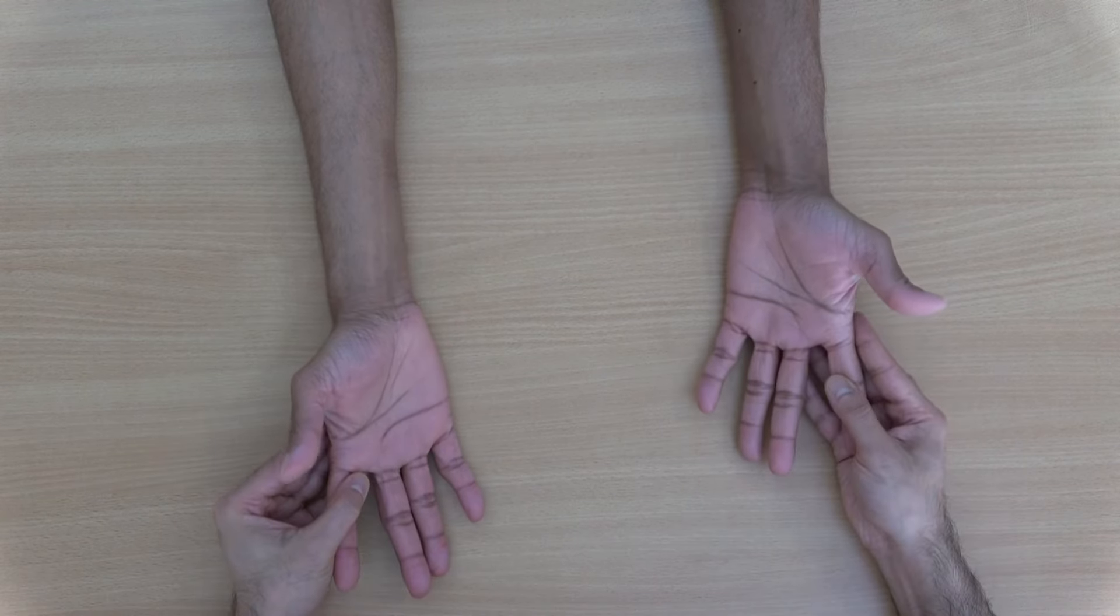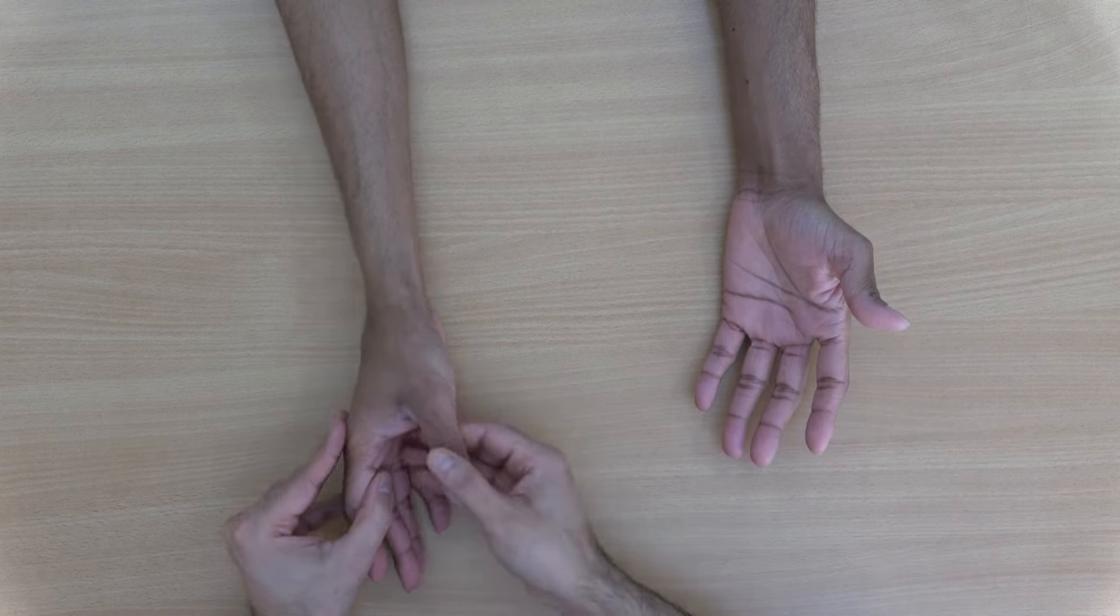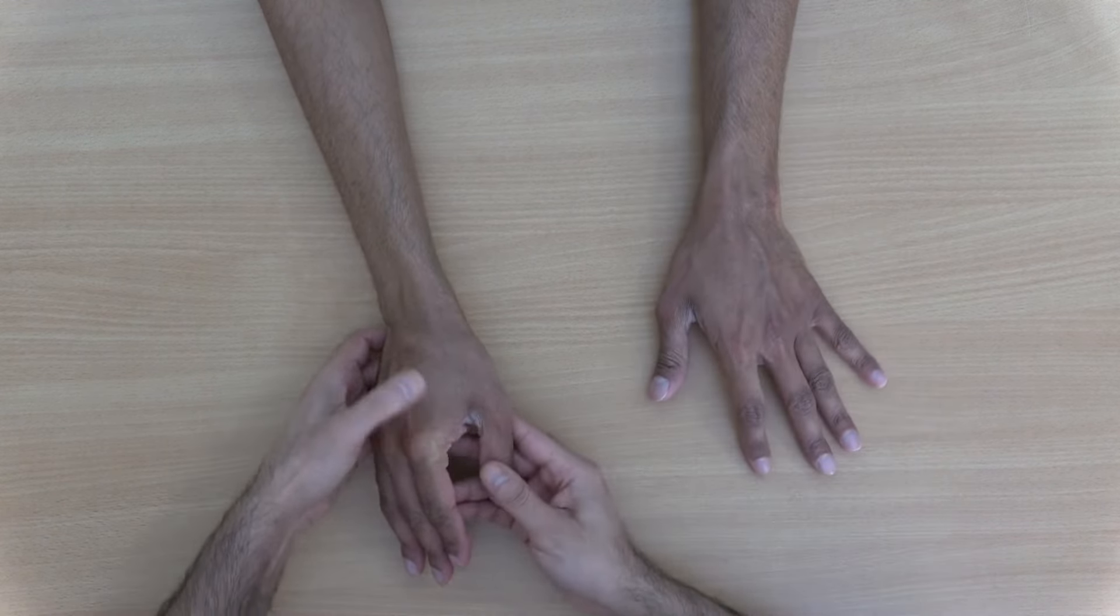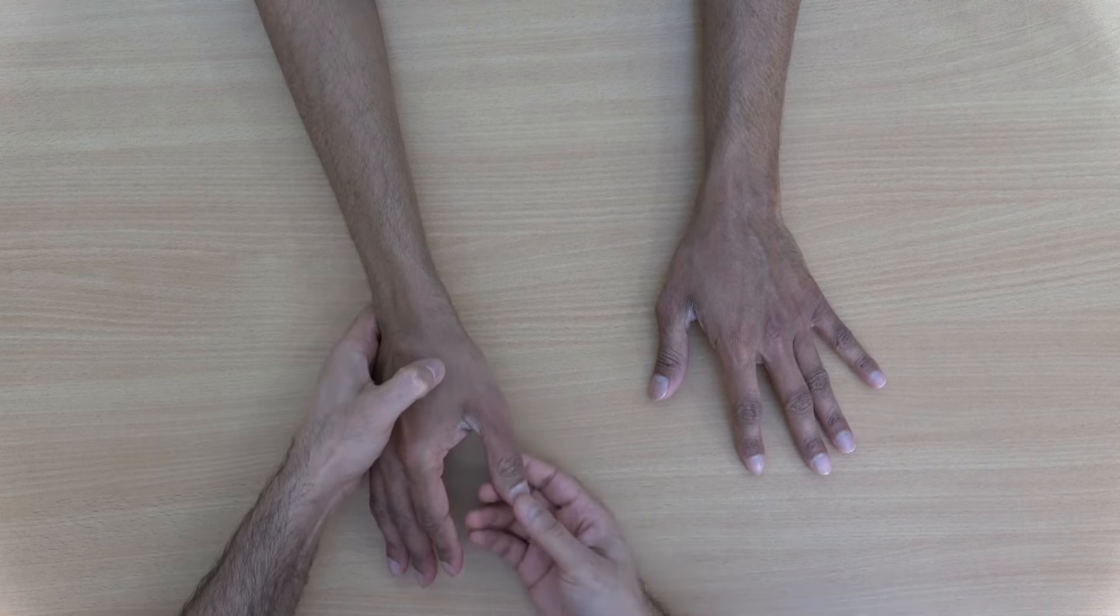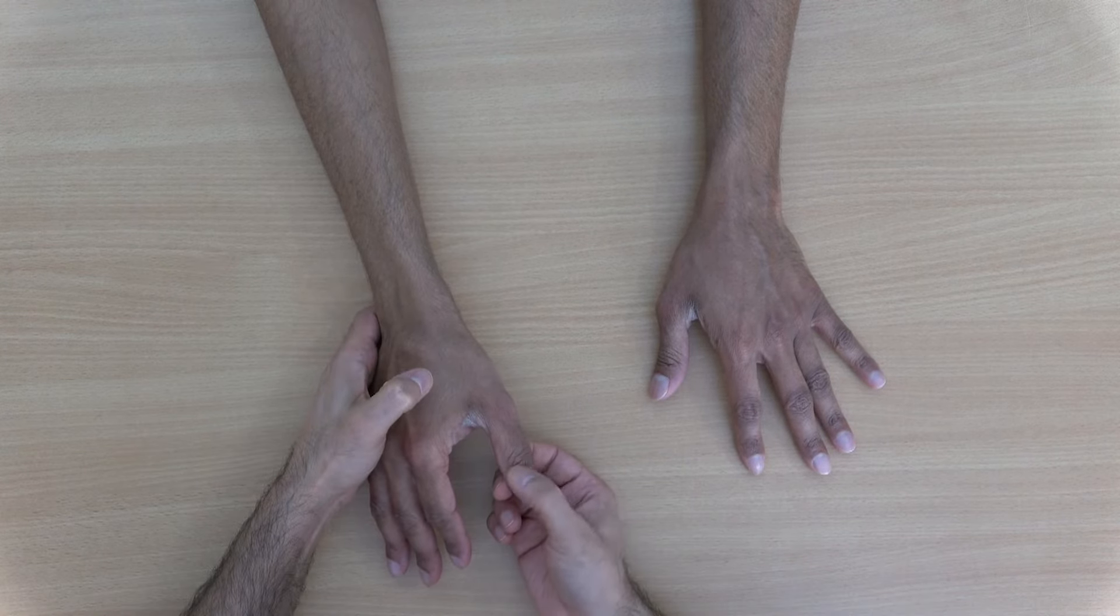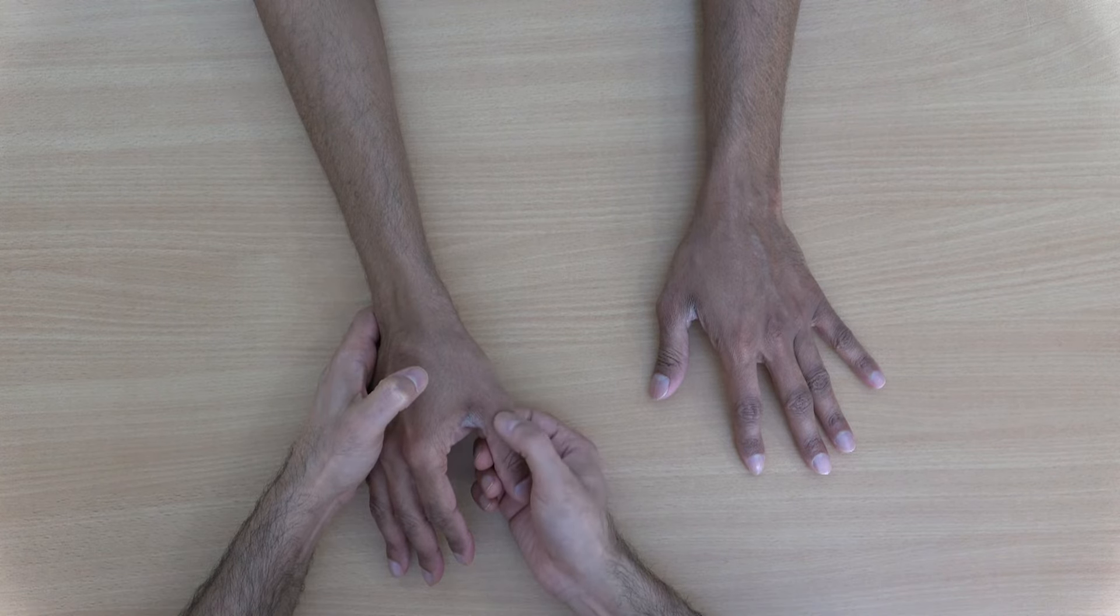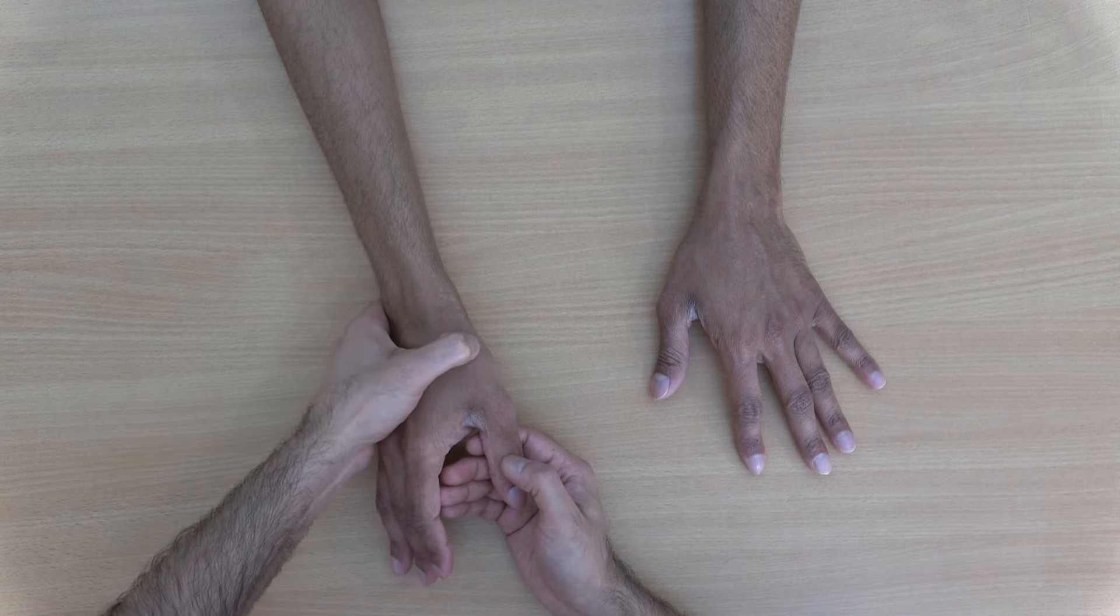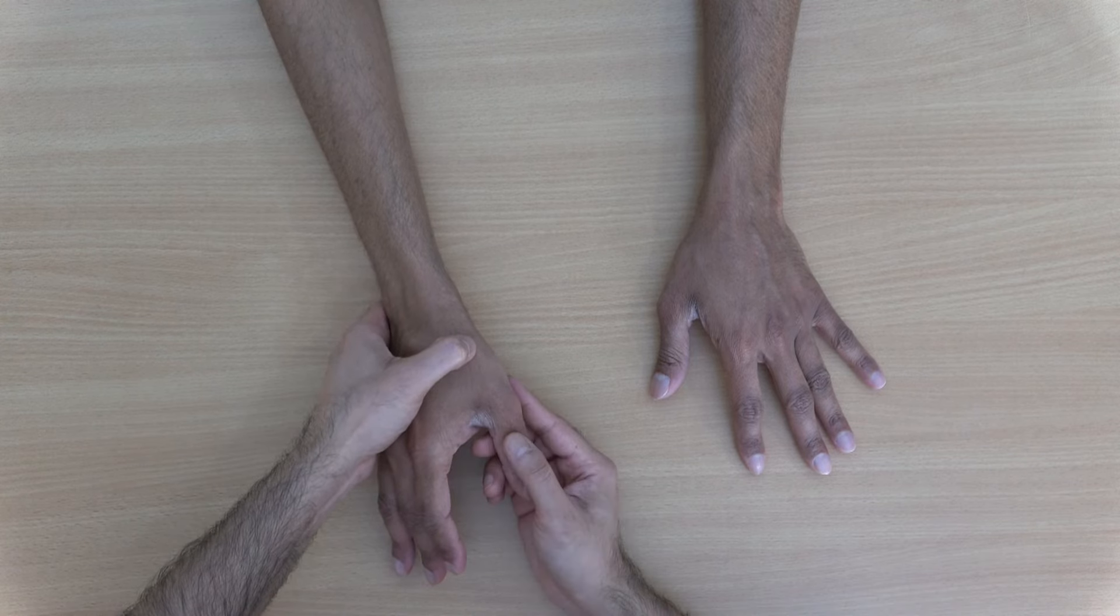Next we move on to palpation and here we're going to palpate for pain and discomfort around the base of their thumb. So the first joint we come across is the interphalangeal joint, the second joint is the metacarpophalangeal joint, and the third joint here is the CMC joint which is the one in question.